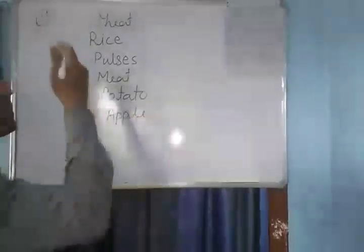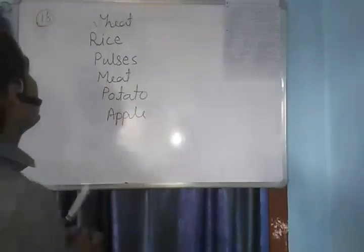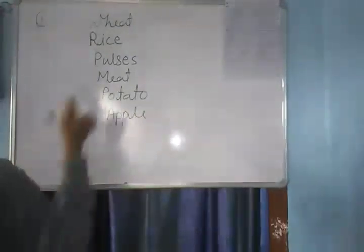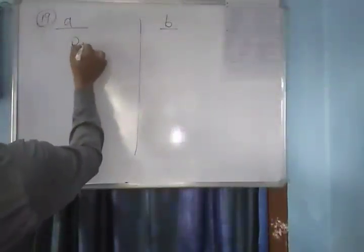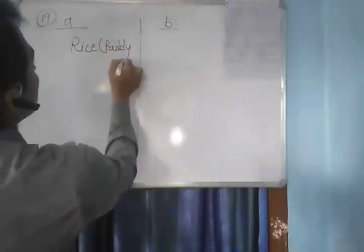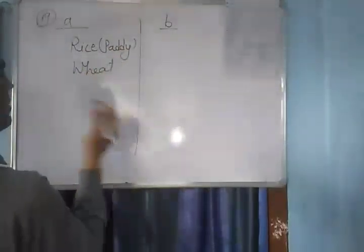These are the examples of food. Moving to question number 19, which is divided into parts A and B. Part A: Name five food materials which come from plants. Part B: Name five food materials which come from animals. For part A, five food materials from plants are: rice, paddy, wheat, water, and pulses like gram.